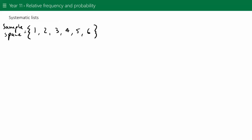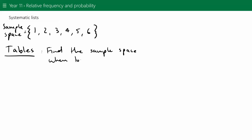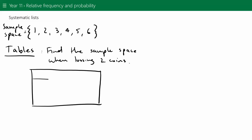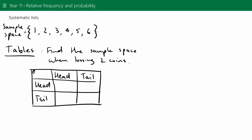Let's do an example. Let's first look at tables. As an example, let's find the sample space when tossing two coins, and we're going to use a table for this. The first coin could either be a head or a tail, and the second coin could also be a head or a tail. Nothing needs to go in the top-left box.